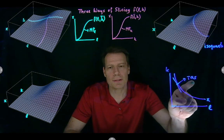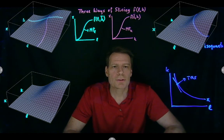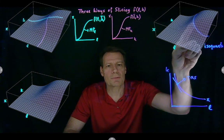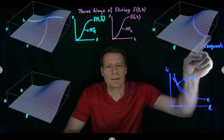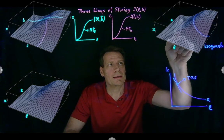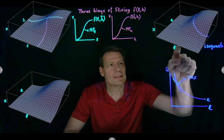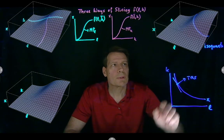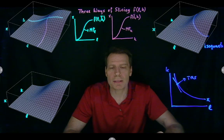Now, it turns out that technical rate of substitution is related to the marginal products. So suppose we pick a particular point on this production function. There's an isoquant that goes to this point, but there's also a slice that holds capital fixed that goes through that point, and a slice that holds labor fixed that goes to this point. So we can measure all three of those slopes. Two of those are marginal products.